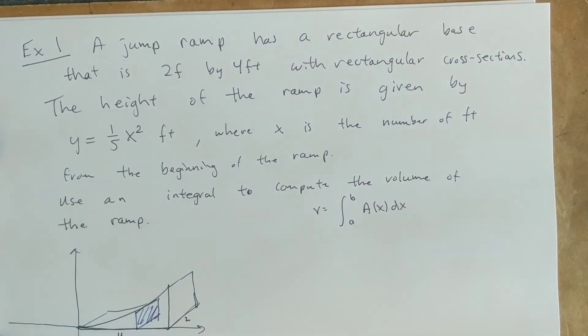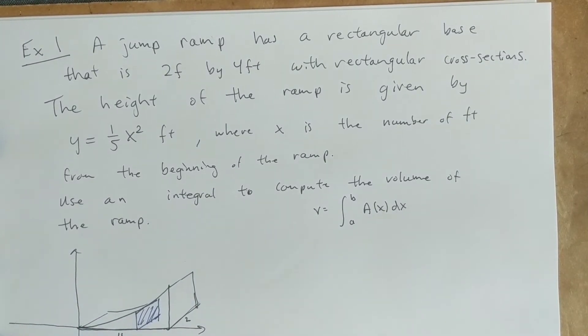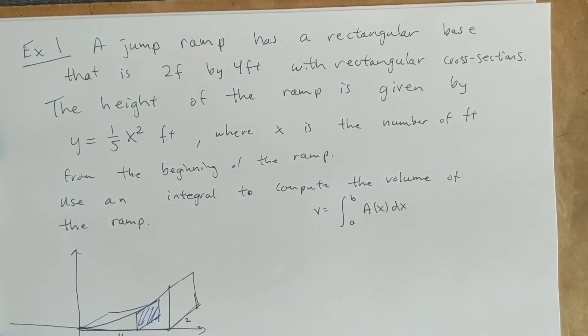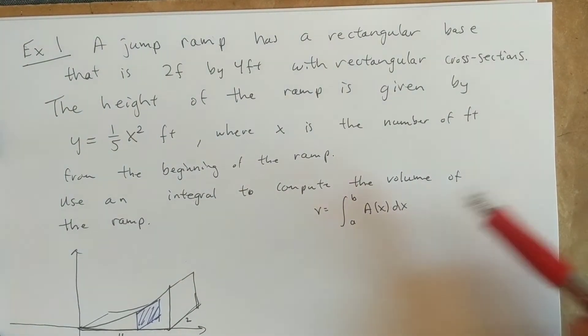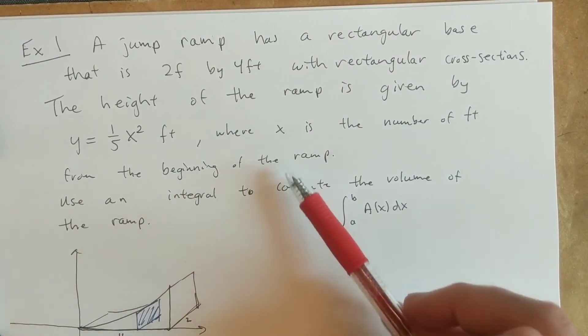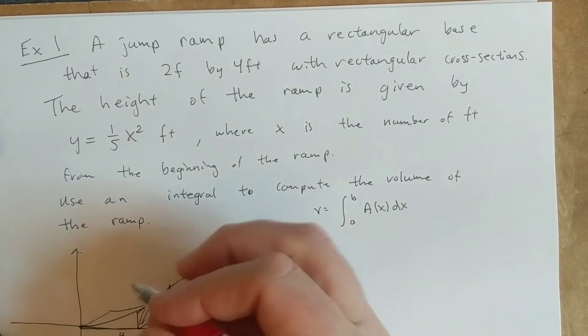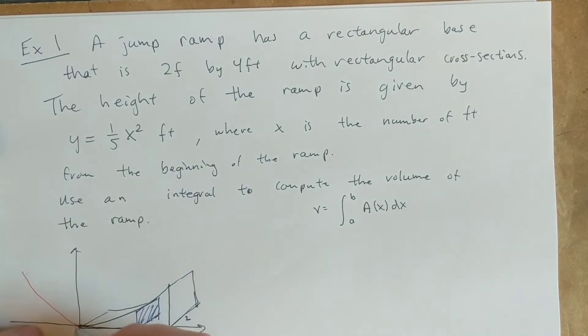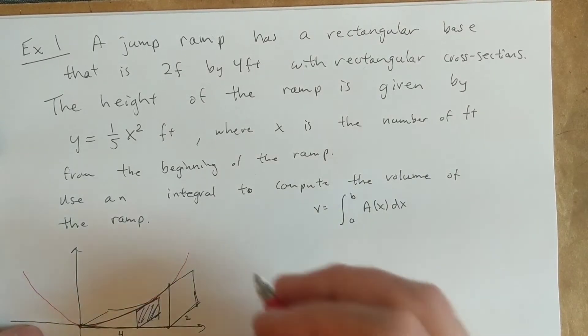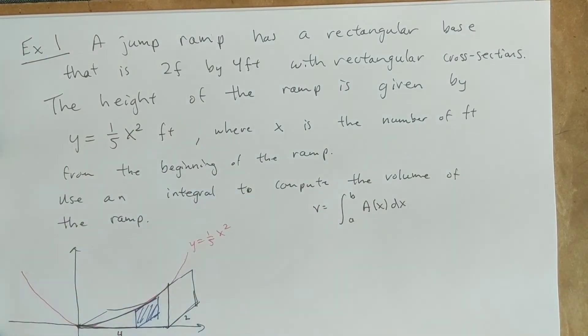And so that's telling us that at each x value here, if I took a cross-section, it would be a rectangle. And those getting taller and shorter is what makes the ramp go from low to high. The height of the ramp is given by the function y equals one-fifth x squared, where x is the number of feet from the beginning of the ramp. So I'm putting the beginning of the ramp at zero, just so I can use the function as it is. So the function, this profile is one-fifth x squared, and that's given in feet.